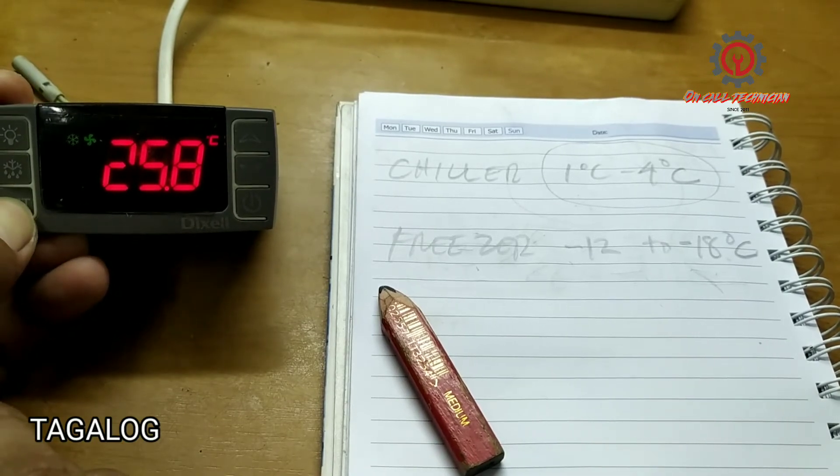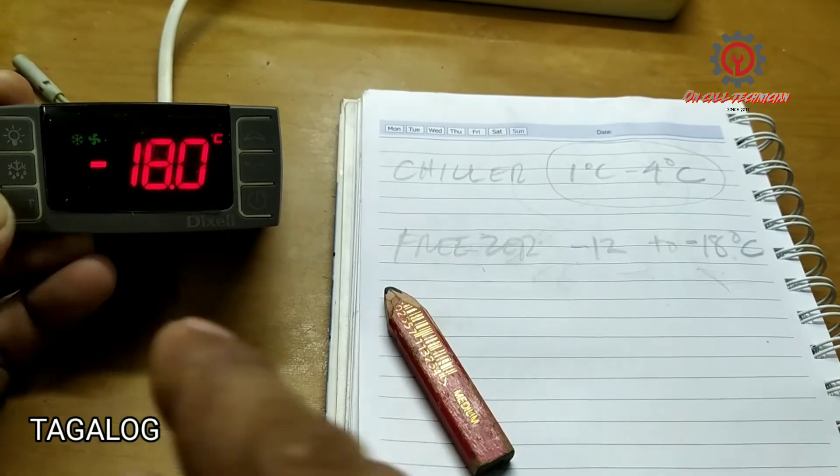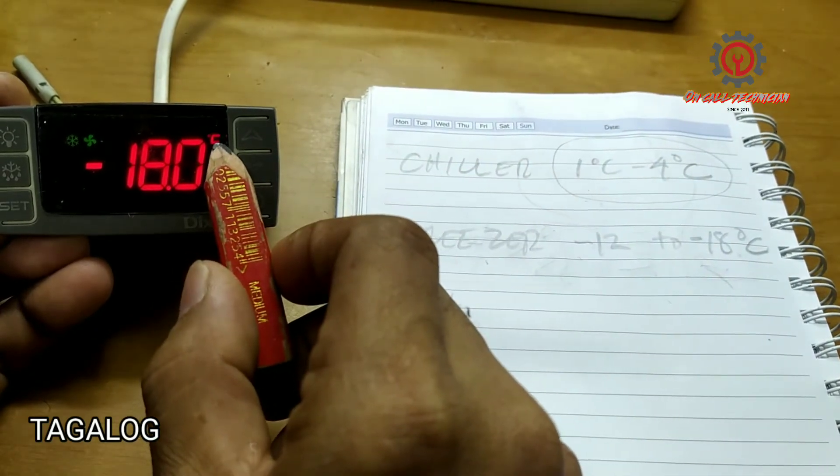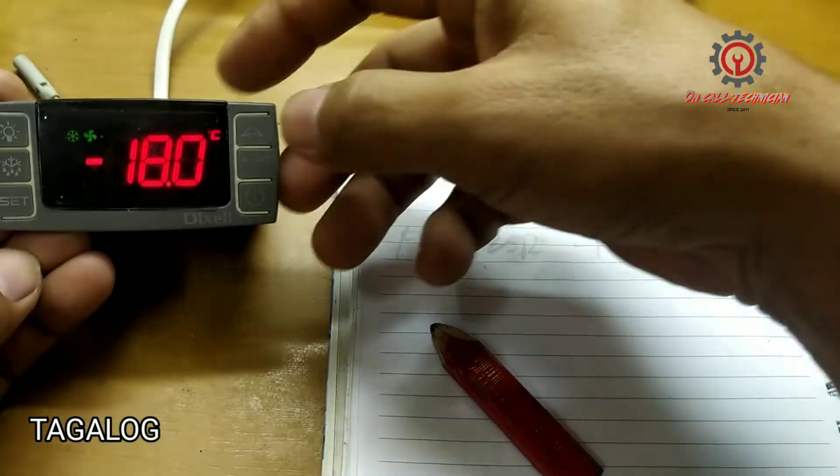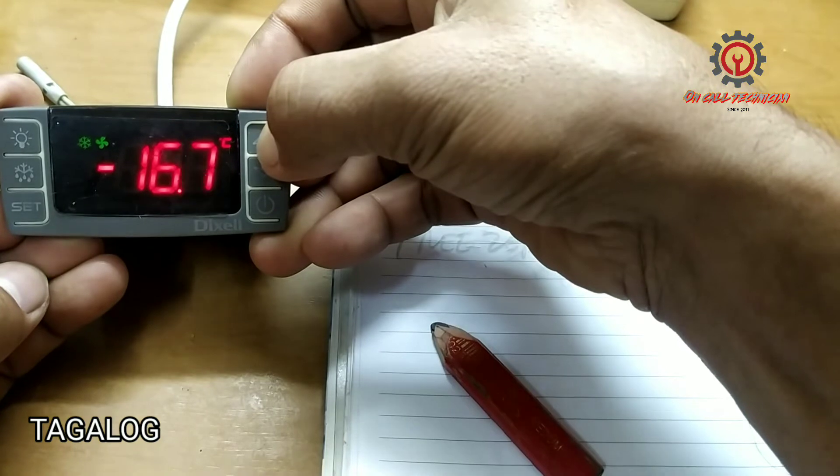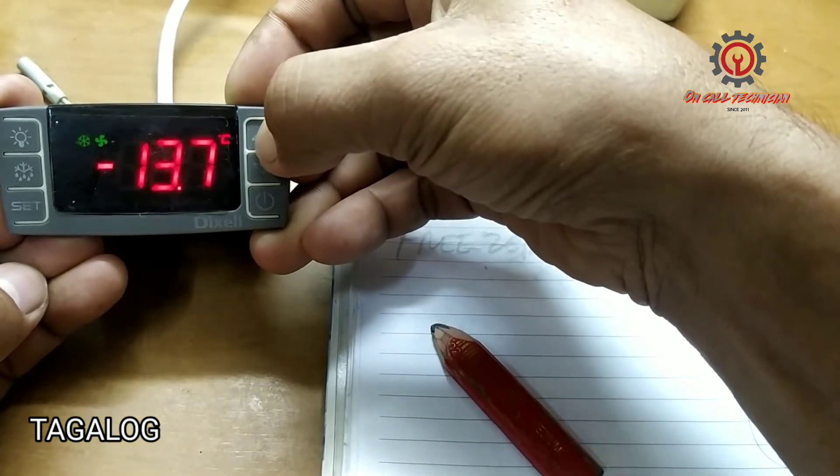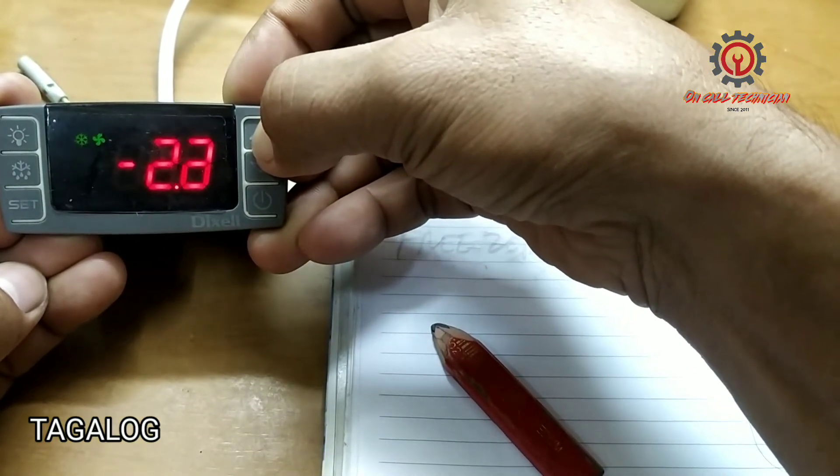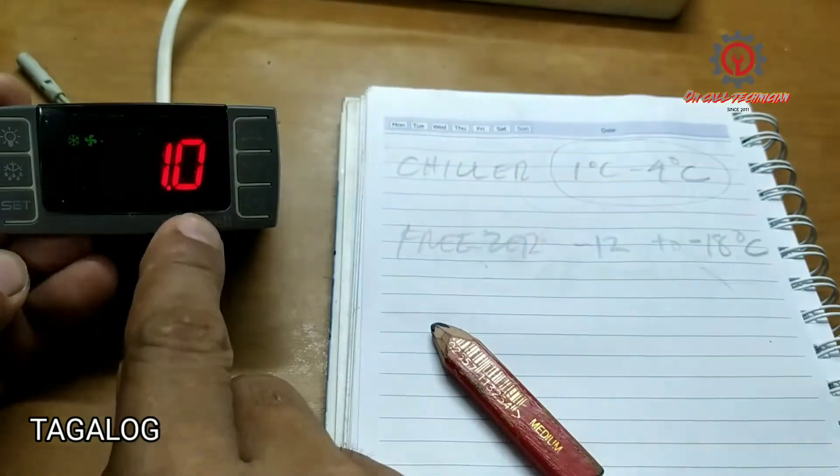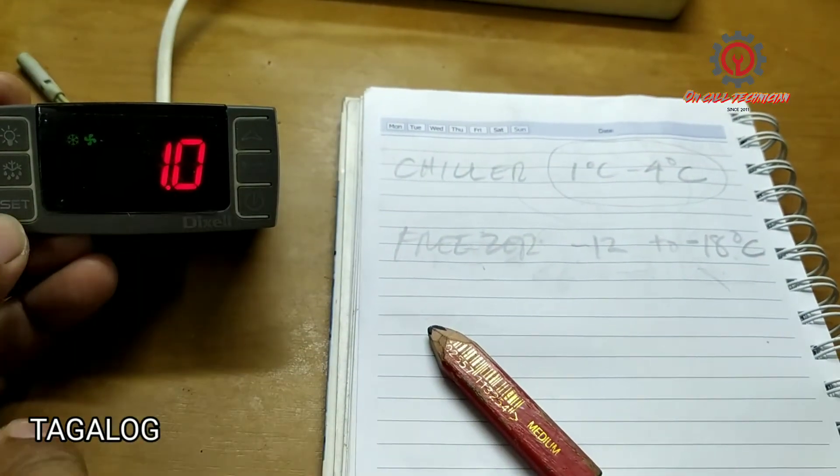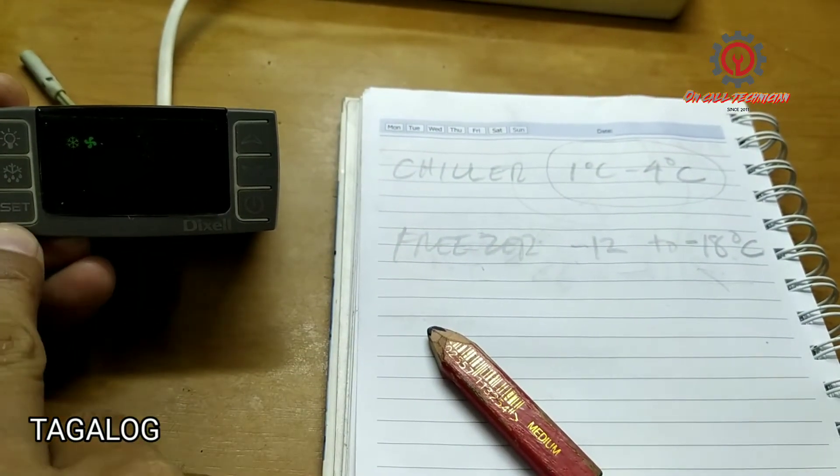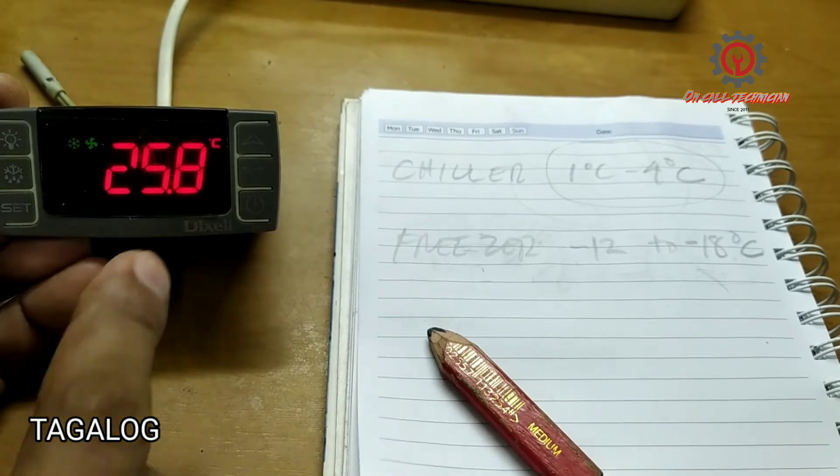I-press ko lang ito for 3 seconds at once na nag-blink ng degree Celsius, bitawan na natin siya at palitan na natin. Yan, ito yung pinakamadaling paraan ng pagpapalit ng ating setpoint. Ito chiller na yan, press set at tapos na.